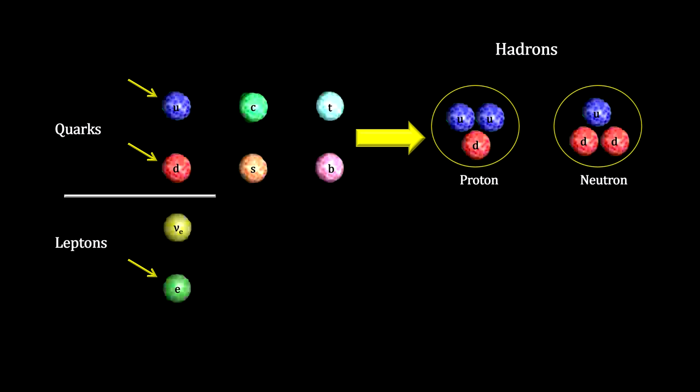Everything we see around us is made of these three stable elementary particles: the electron, the up quark, and the down quark.